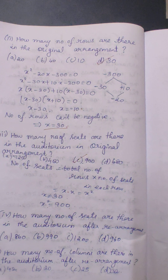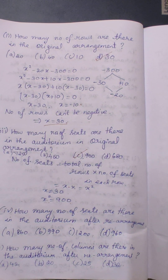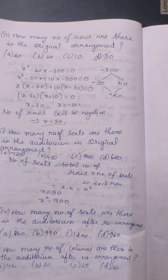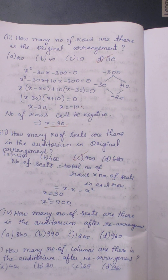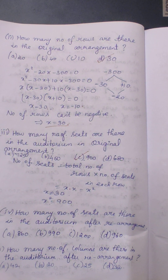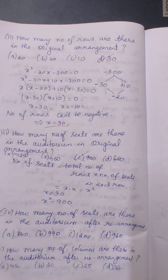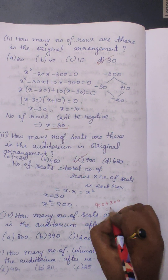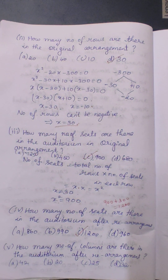Moving to the fourth question: how many seats are there in the auditorium after rearrangement? In the rearranged setup, the number of seats increases by 300. The original number of seats was 900, so adding 300 gives us 1200. Therefore, 1200 seats are in the new arrangement.